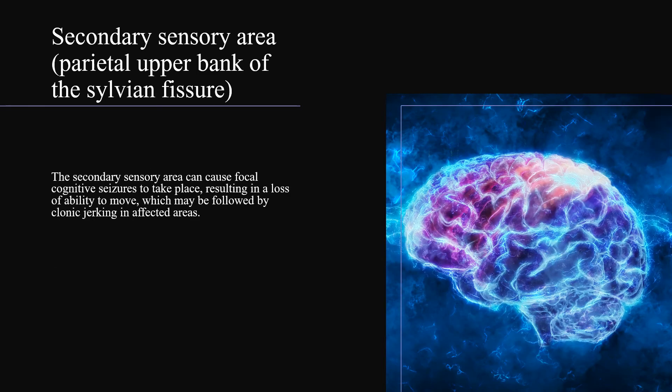The secondary sensory area can cause focal cognitive seizures to take place, resulting in a loss of ability to move, which may be followed by clonic jerking in affected areas.